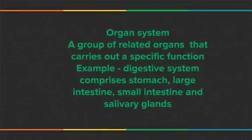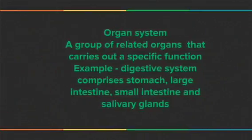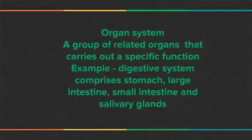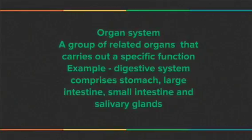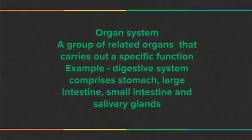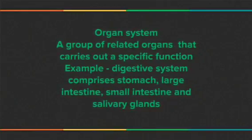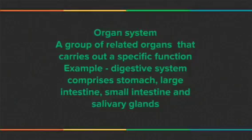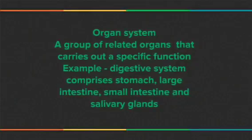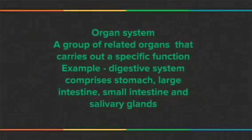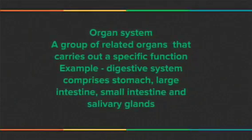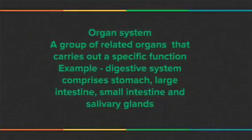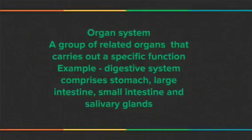Organ system: a group of related organs that carries out a specific function. For example, the digestive system comprises the stomach, large intestine, small intestine, and salivary glands.